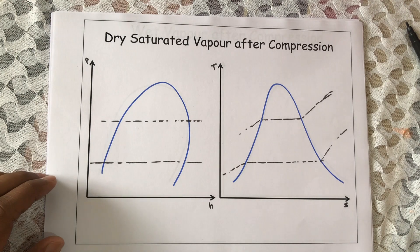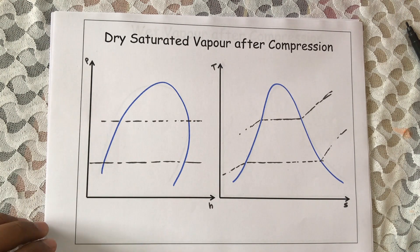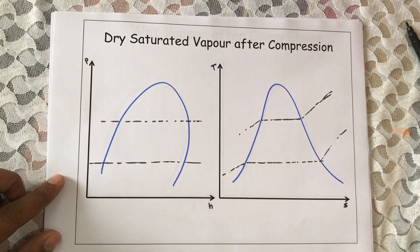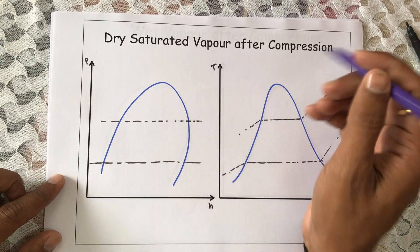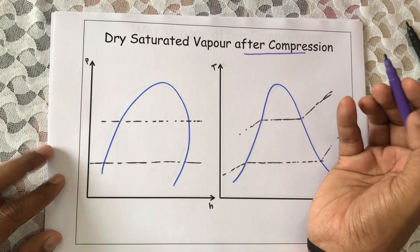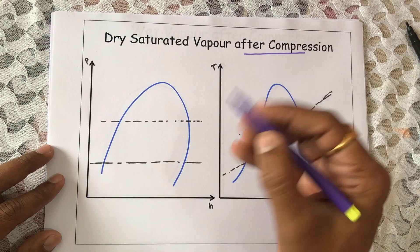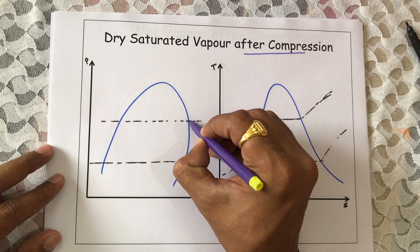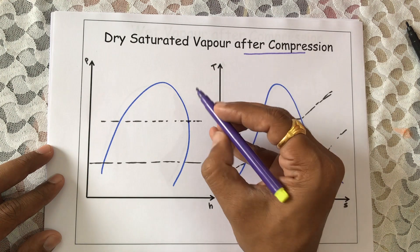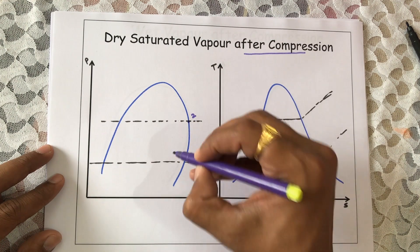Now let us study the types of simple vapor compression refrigeration cycle one by one. The first type is dry saturated vapor after compression, which means point number two is on the saturated vapor line.